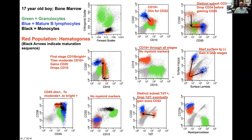CD45 goes from dim to moderate to bright. Similar to the CD34 phenomenon, TDT shows a distinct subset of TDT-positive cells, and then they drop TDT — two distinct subsets, TDT-positive and TDT-negative, not a big smear or all TDT-positive. The CD45-dim stage is loosely equivalent to the CD34-positive stage, which is also loosely equivalent to the TDT-positive stage, and which is loosely equivalent to the CD10-brighter population. So this cluster is the CD45-dim, TDT-positive, and CD34-positive one — trying to put this into six dimensions.